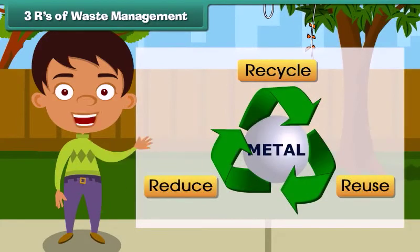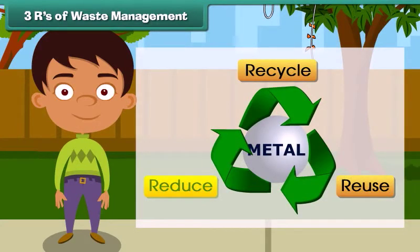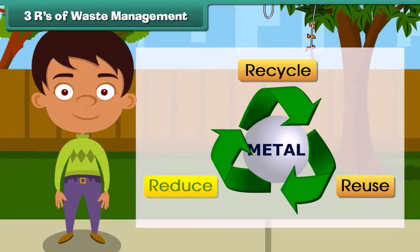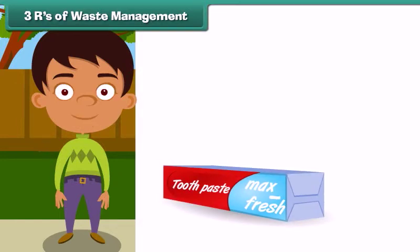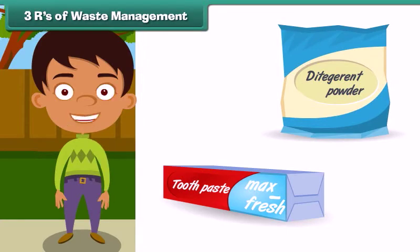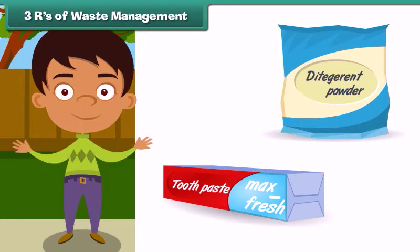The third R stands for reduce. Reduce means to decrease the use of substances that harm the environment. For example, we must buy larger packs of toothpaste, dishwasher detergents, cereals, etc., and reduce the quantity of packaging material.